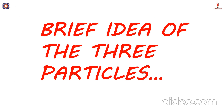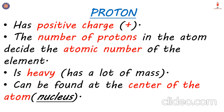We will now learn a few basic properties of these particles — electron, proton and neutron. We will elaborate in further videos, but for now I will give a brief idea about these particles. Starting with proton: the first property is that a proton has a positive charge — a single positive charge. One proton will add a charge of plus one.